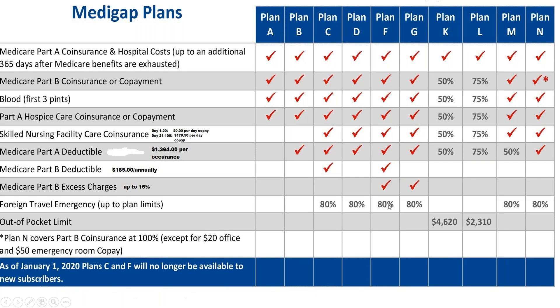I would absolutely caution you to stay away from Plan F. Plan Fs are going away, Plan F rate increases are greater than any other plan, and Plan F is not a better economic value than Plan G. When you compare a Plan F premium to a Plan G, the premium difference will be $400, $500, or $600 a year more — greater than the $185 annual deductible. It is not worth it. Stay away from Plan F.